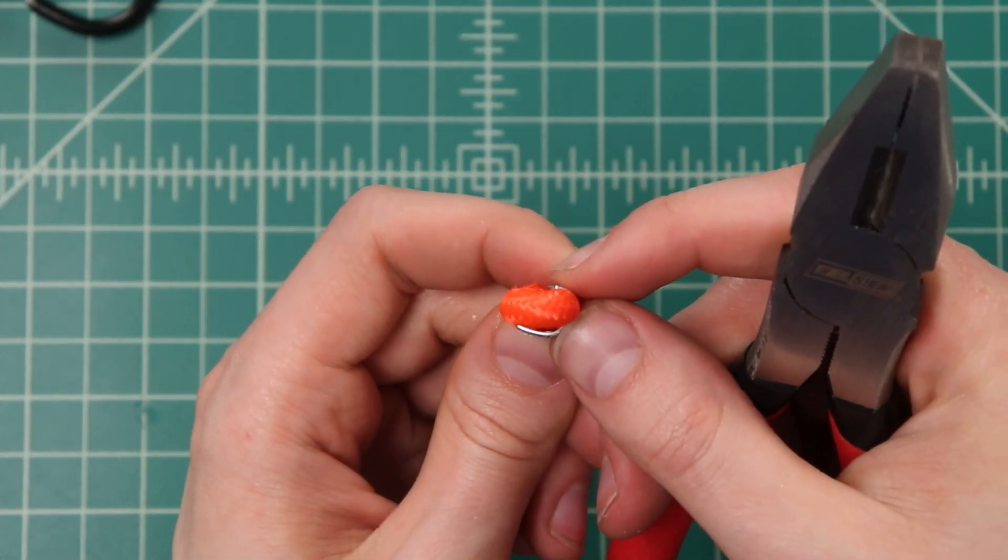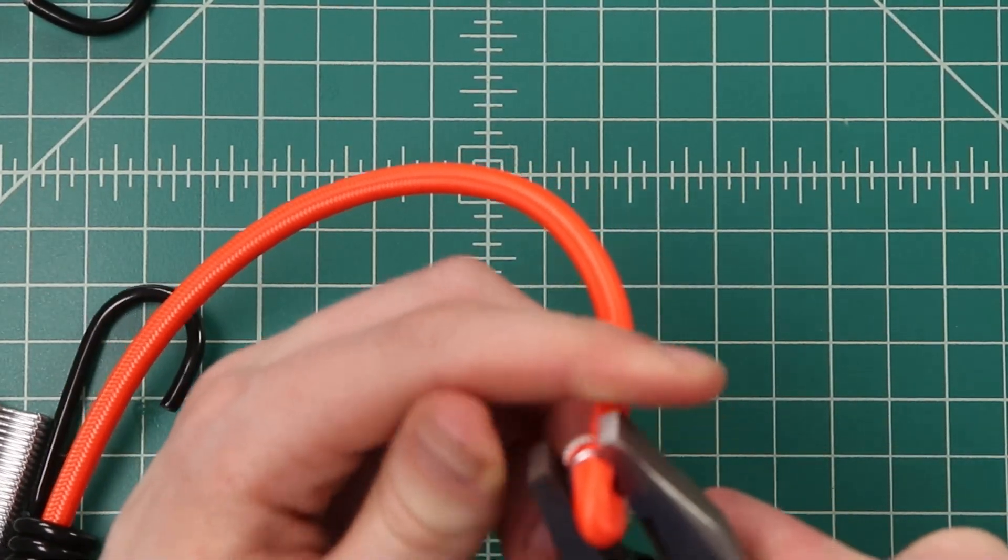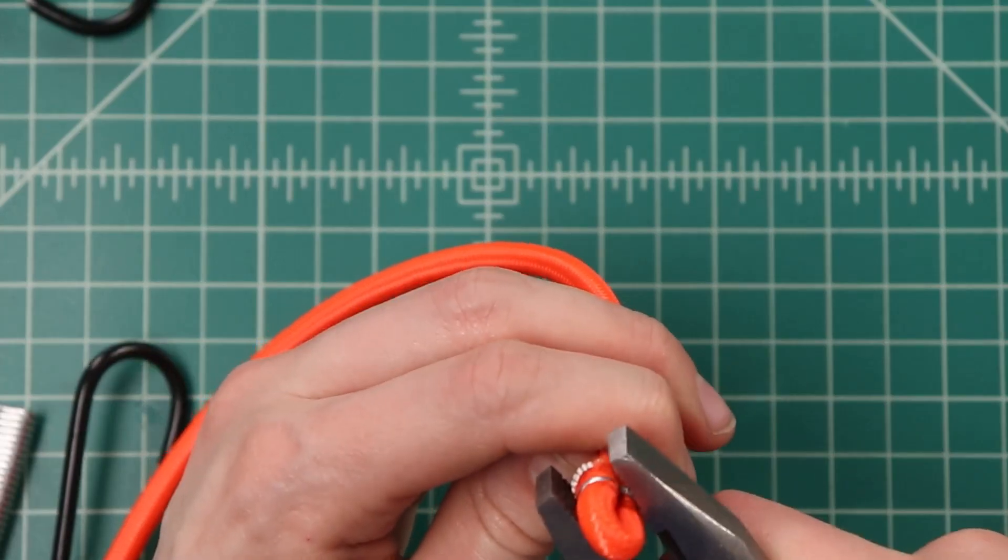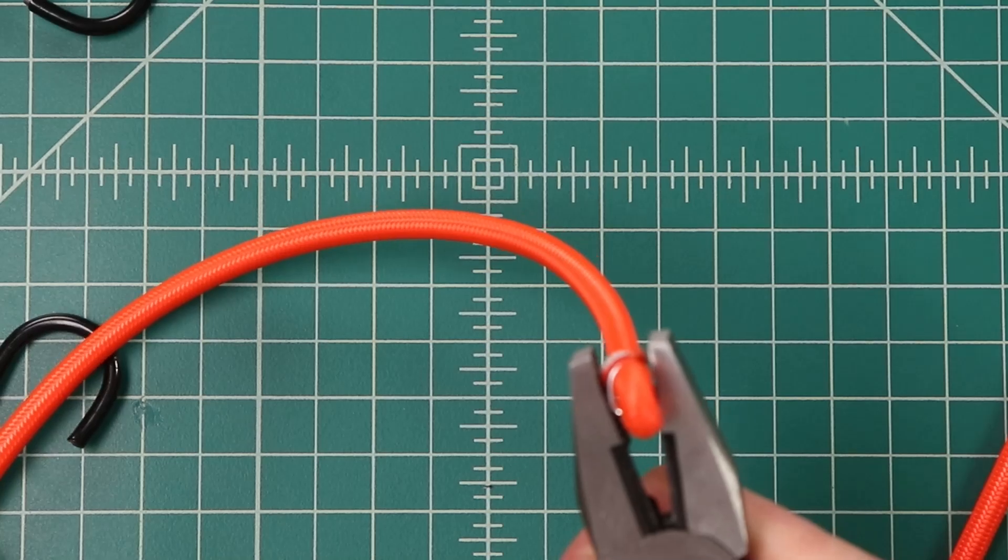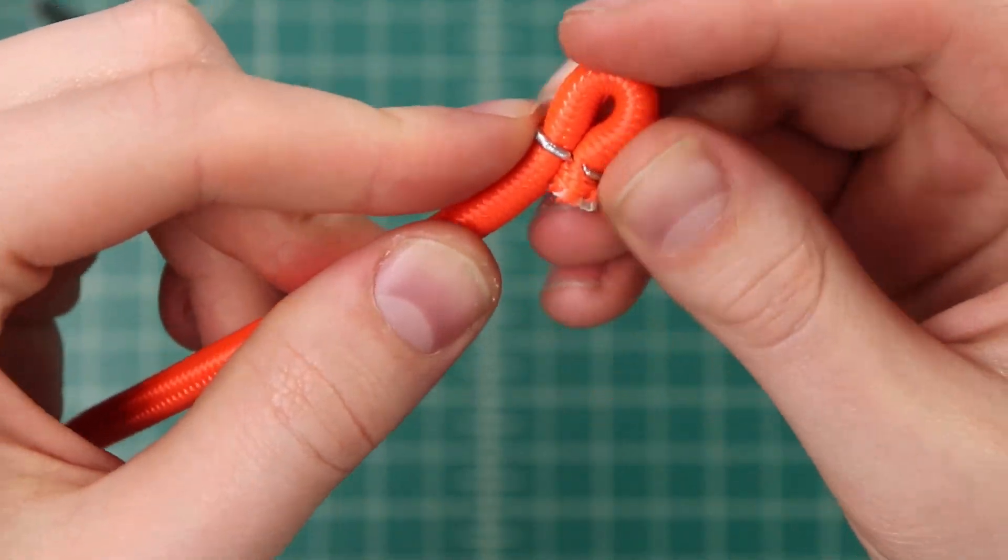You just want to watch out for this back end kinking. We'll just kind of work it closed gradually. But the result should be about the same. There we go, a little less pretty, but still just as functional.